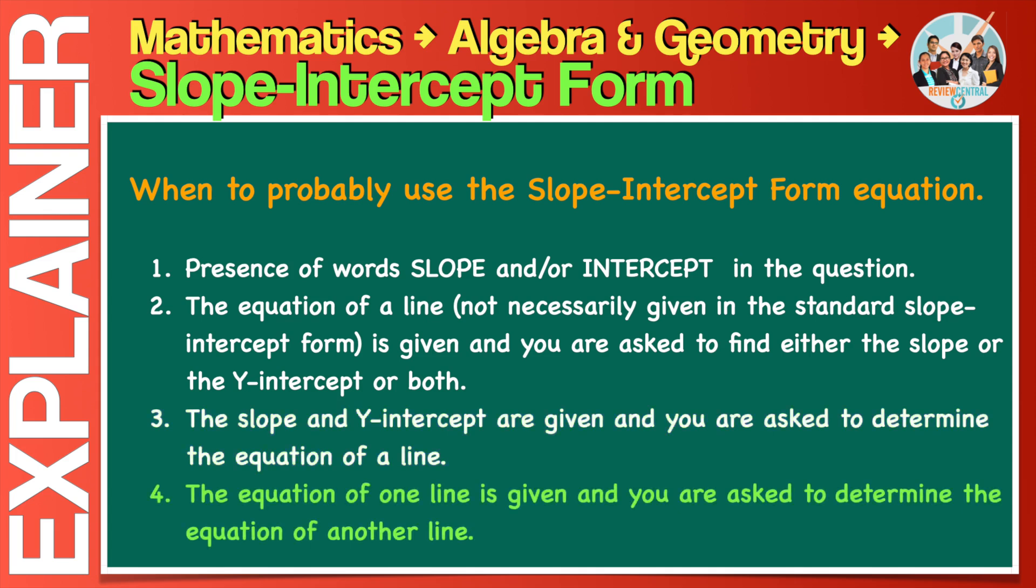Fourth, the equation of one line is given and you are asked to determine the equation of another line. These lines usually intersect each other, or are connected or related one way or the other. There can be several other ways, mostly a combination or variation of the above examples. Let's take a quick preview of some examples for your better appreciation.